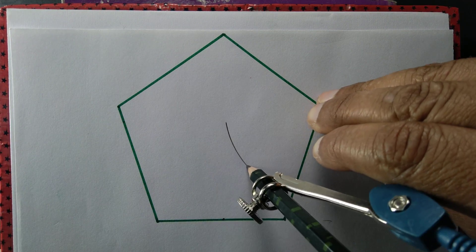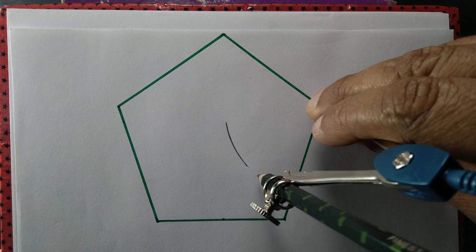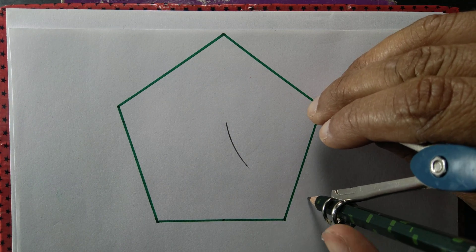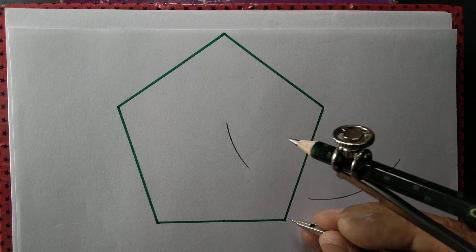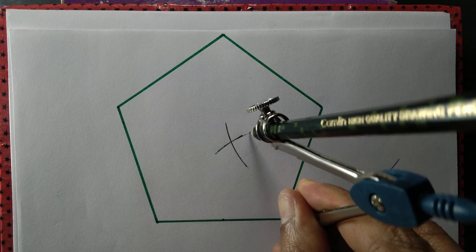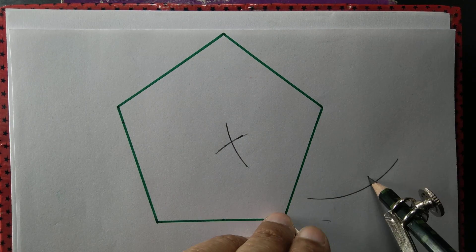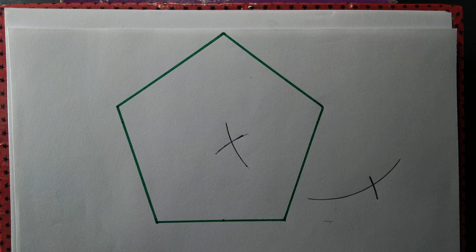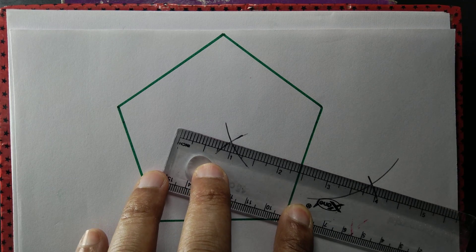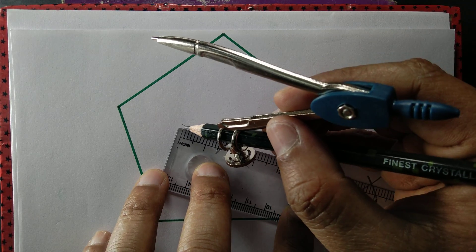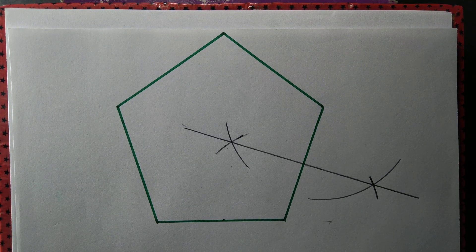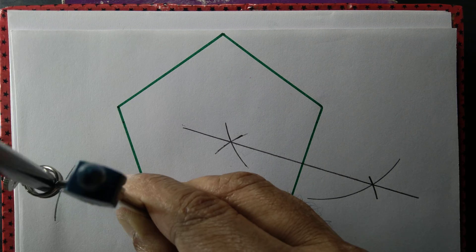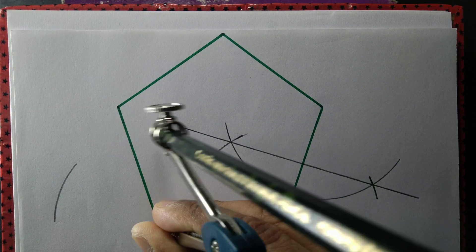For one side, we draw an arc above and below from one endpoint, then two arcs from the other endpoint. Those two arcs intersect at a point, and we join that intersection point with a straight line to complete the perpendicular bisector of the first side.